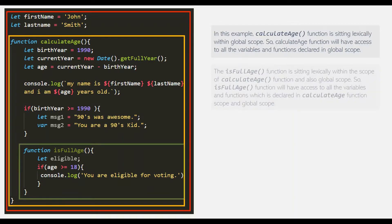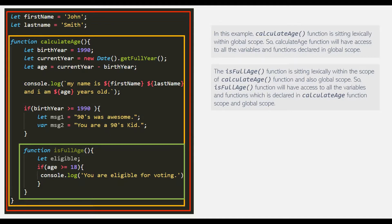Similarly, the isFullAge function is sitting lexically within the calculateH function scope, so it will have access to all the variables and functions declared in its parent scope — that is, in the scope of calculateH. And since calculateH has access to global variables and functions due to scope chain, the isFullAge function will also have access to global variables and functions.